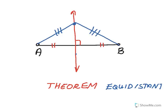I could take a different point on the perpendicular bisector and measure its distance to A and to B — it's exactly the same. So every point on a perpendicular bisector is equidistant from the endpoints of the segment.